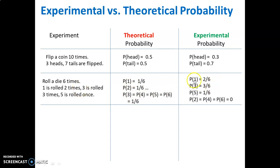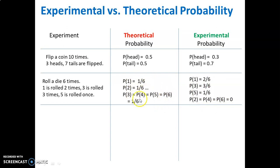However, in this small experiment, the probability of rolling a one was two out of six because two ones were rolled. Three was three out of six, and a five was one out of six. We did not roll any twos, fours, or sixes, so those probabilities are equal to zero. Our experimental probability is very different from what we expect in theory because we had a very small experiment.